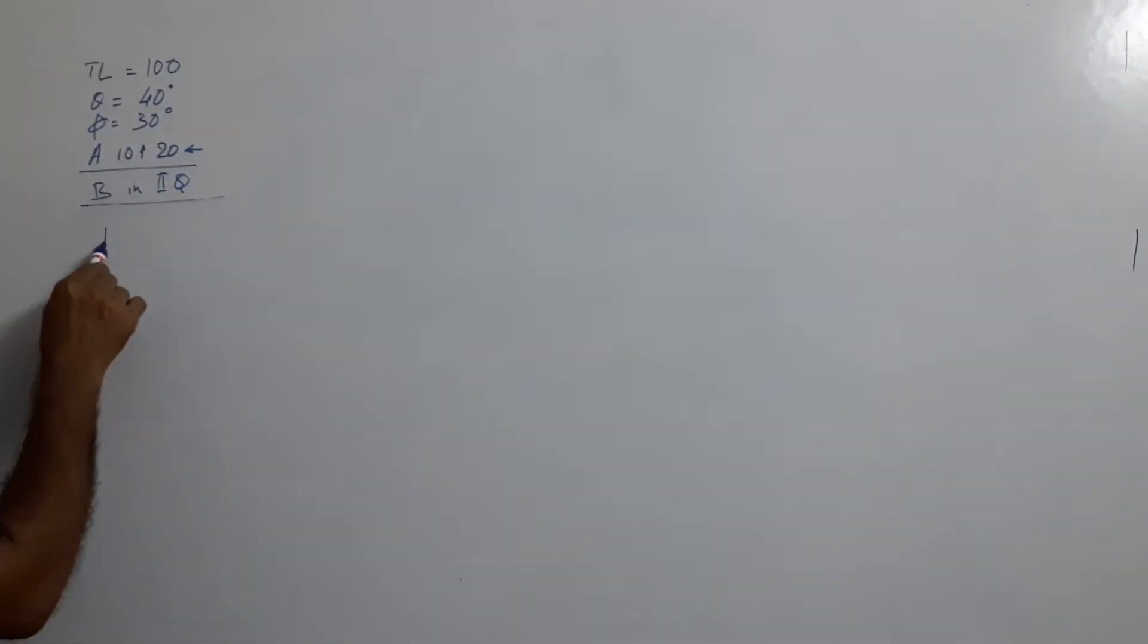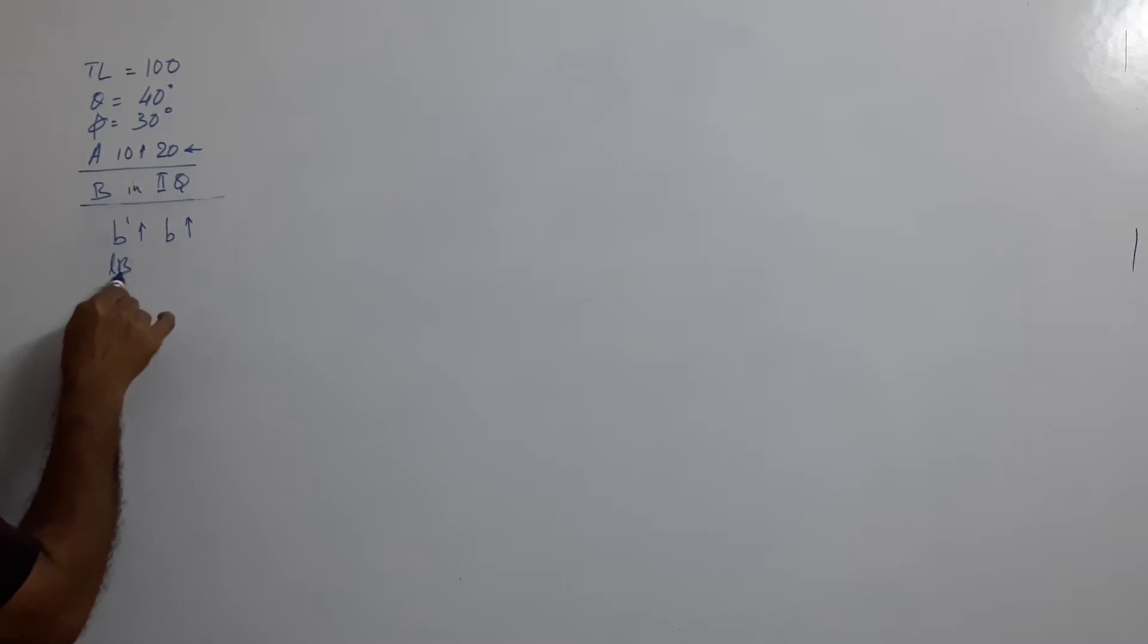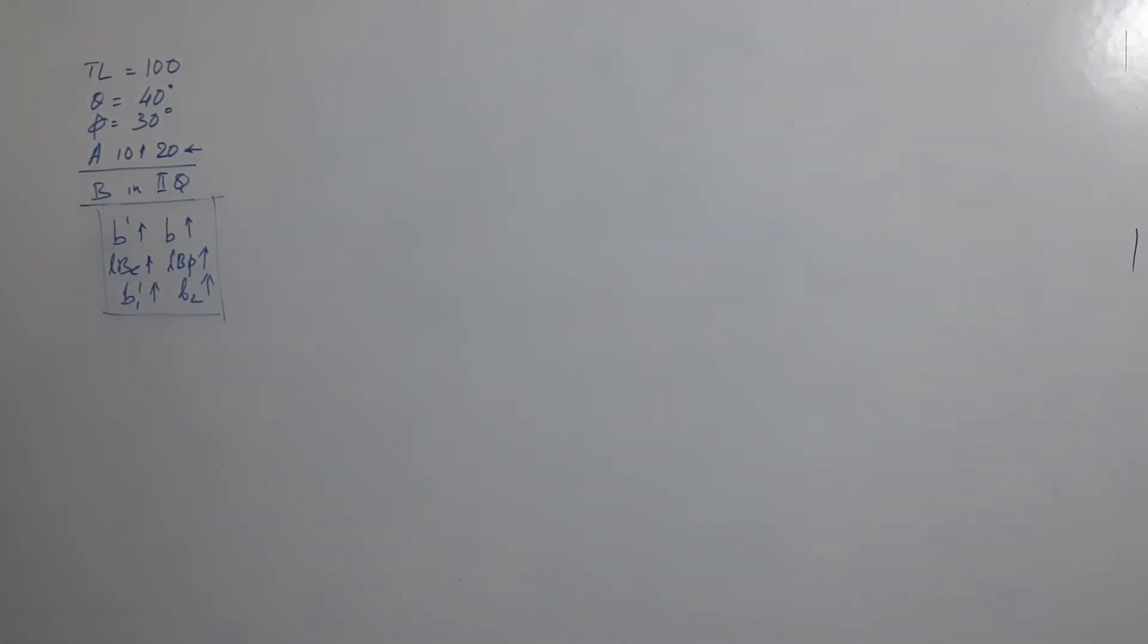Let us chart down the conditions. B in second means what? B dash will be above XY, small b will be above XY, LBE will be above XY, LBP will be above XY, B1 dash will be above XY, B2 will be above XY. Very simple. Now draw XY line.